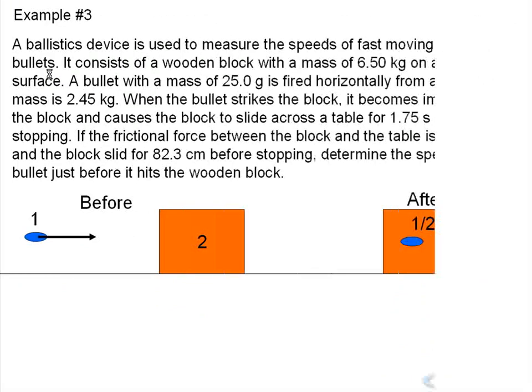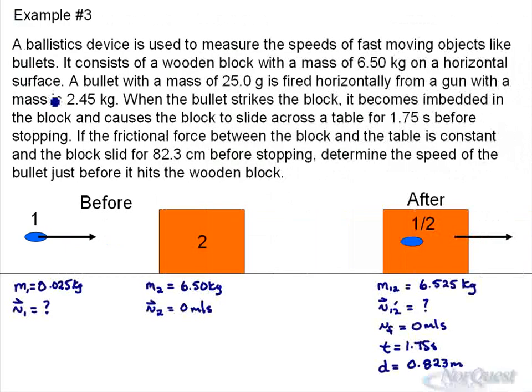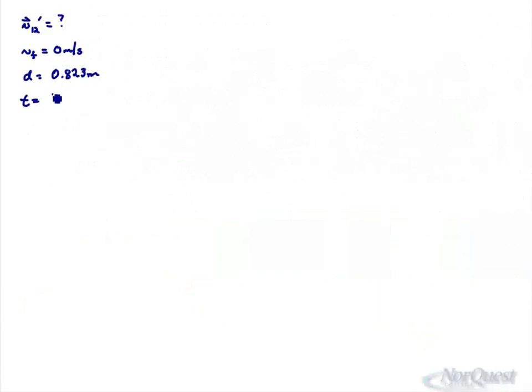I'll write these constants off to the side. The initial velocity of that combined mass was unknown. The final velocity was 0 meters per second. We had a distance of 0.823 meters and a time of 1.75 seconds. So there's our information. Let's use this formula: distance equals VF plus VI divided by 2 times T. The nice thing is VF is 0, so this simplifies to VI over 2 times T.